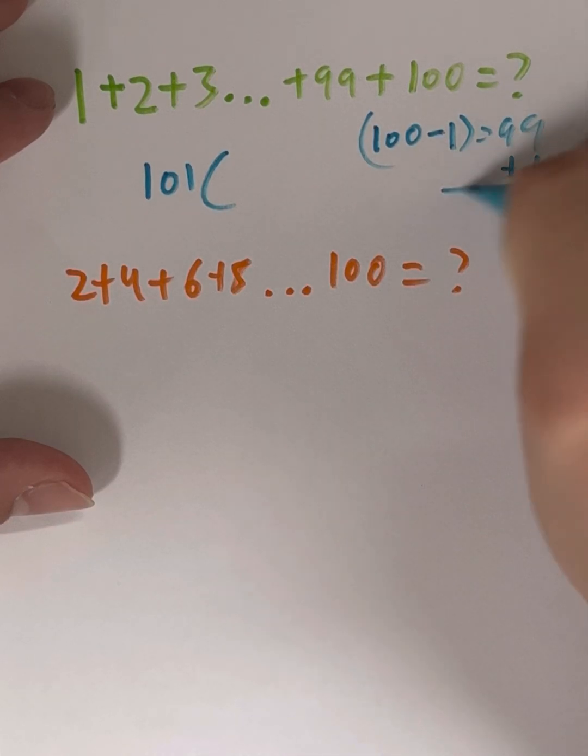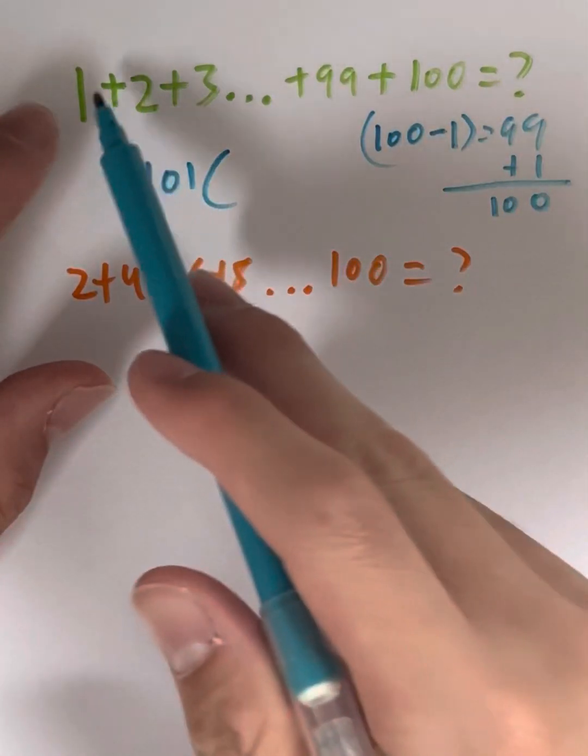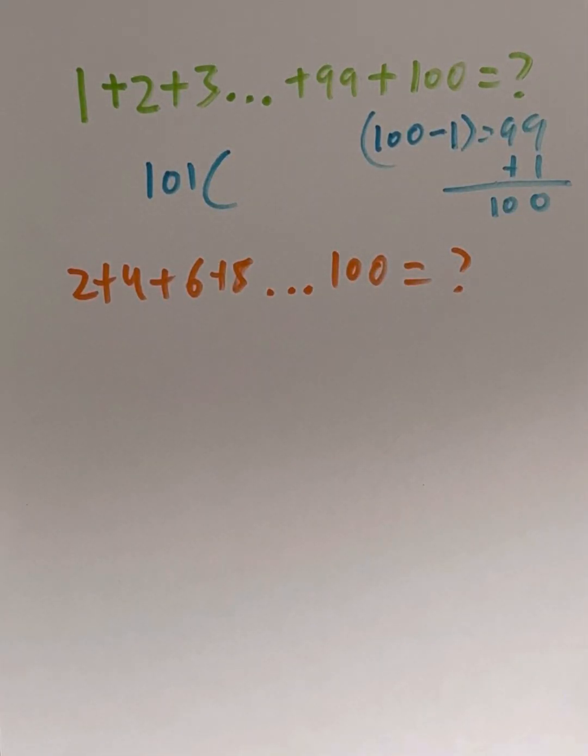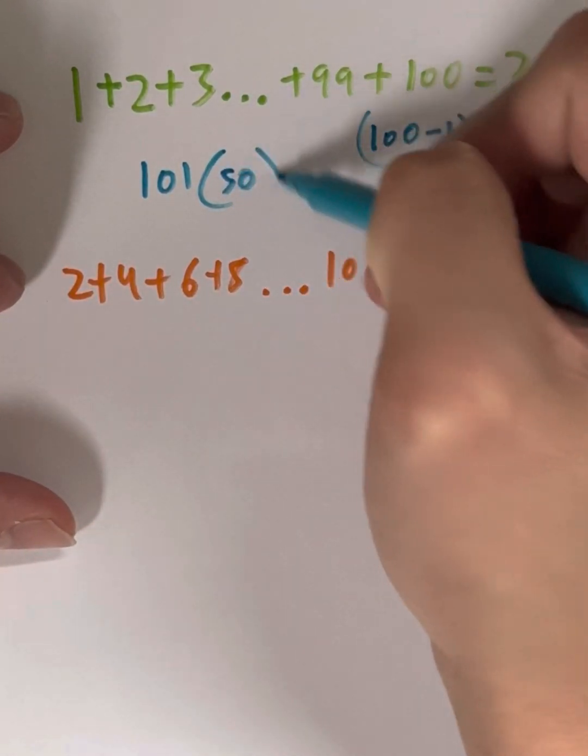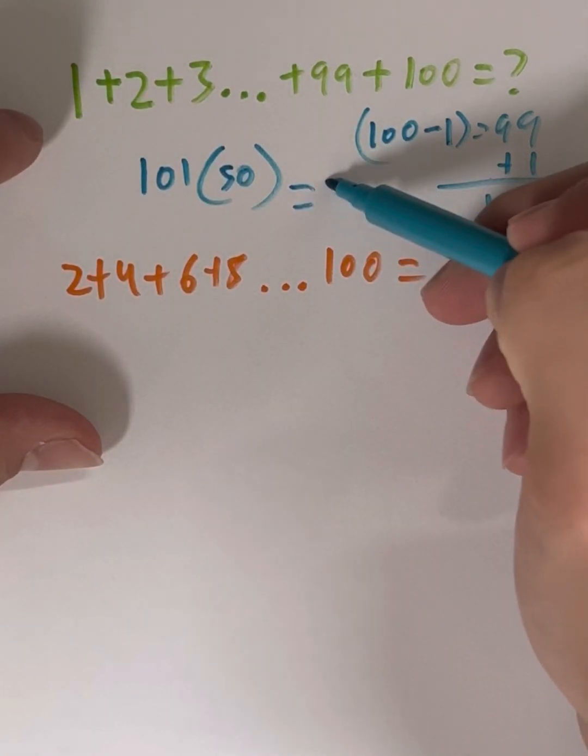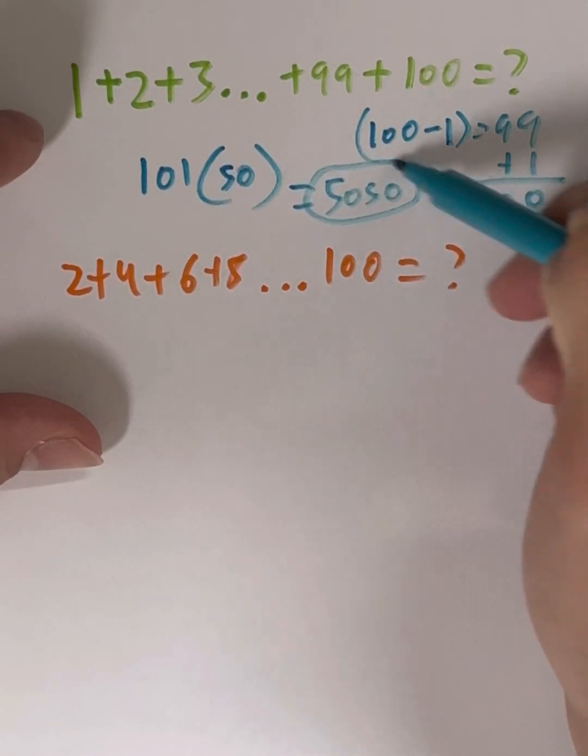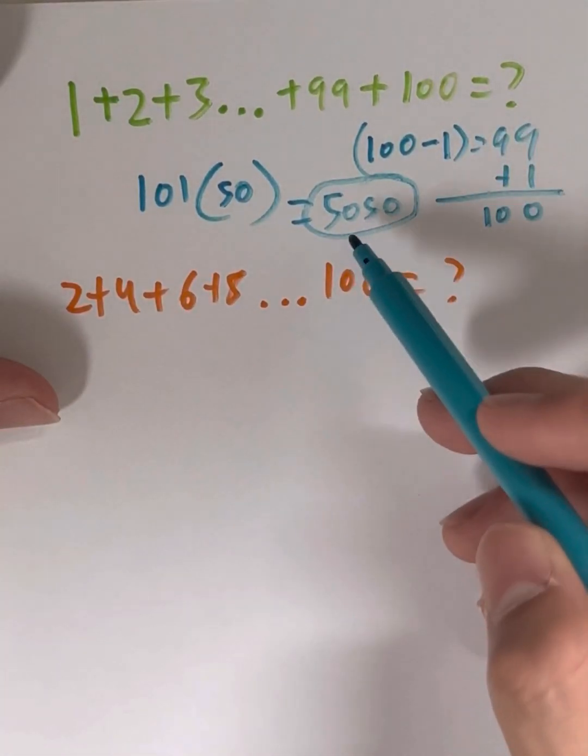And then we add 1 to that. That's how you find the amount of numbers in anything. So in total, there are 100 numbers from 1 to 100. That's kind of logical. And we divide that by 2 because that's the number of pairs there. 100 divided by 2 gives us 50. So your solution has to be 101 times 50, which is going to give you an answer of 5,050. So 1 plus 2 plus 3 all the way up to 100 is 5,050.